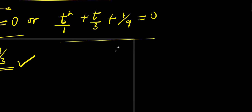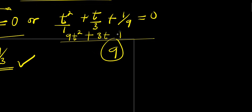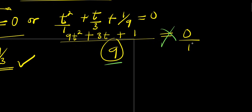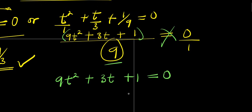I find the LCD, which is 9. Multiplying through: 9 times t squared, plus 9 divided by 3 times t, plus 9 divided by 9 times 1, equals 0. After cross-multiplying, we have 9t squared plus 3t plus 1 equals 0.